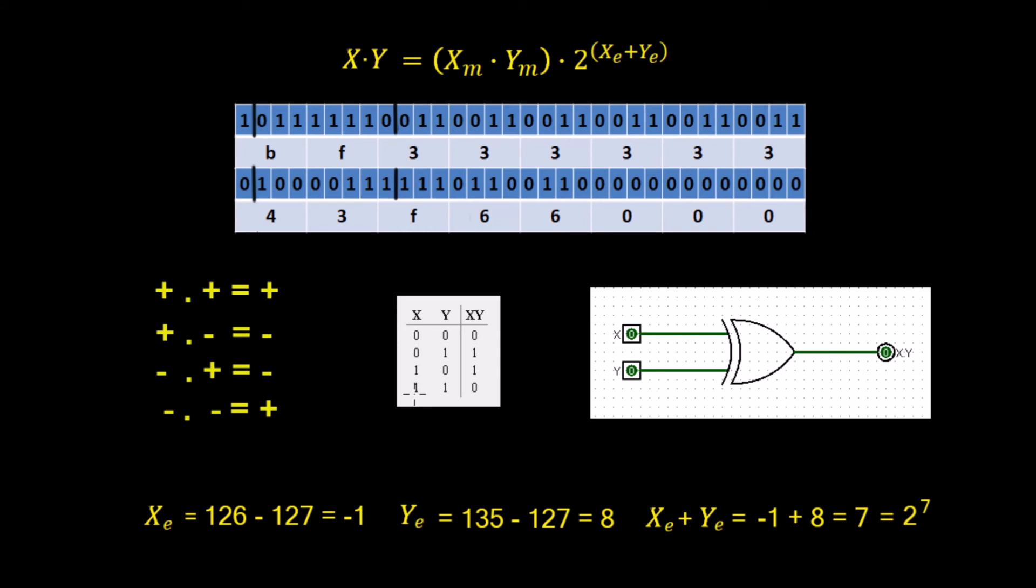Now this is a common gate and it's called the exclusive OR gate. We've come across that before in the previous course. We can work the sign out just by using an exclusive OR gate, so we can simply put in the value for the sign bit into X and the value for the sign bit into Y and we'll get the final output which will be the sign bit for X times Y. That's quite straightforward.